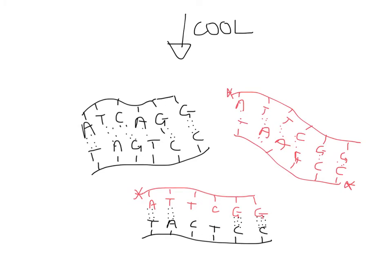What happens next is that the scientists reheat the DNA again. This will break the hydrogen bonds between the DNA, allowing the strands to separate. But what the scientists are looking for this time is the temperature at which they separate. You can see here that in the human DNA all the bases are complementary, so all these hydrogen bonds will need to be broken by heating in order to separate the strands. Similarly, with the chimp DNA all the bases are complementary, so again it's going to need quite a high temperature to break all those hydrogen bonds. But with the hybrid DNA, which is a mixture of complementary and non-complementary base pairs, there are fewer hydrogen bonds and therefore it will take less heat to separate these hybrid pieces of DNA.